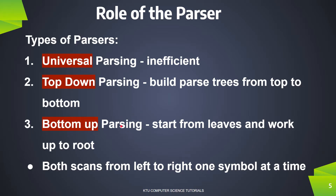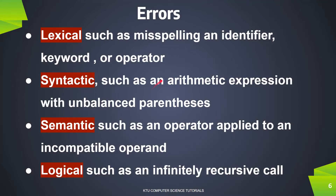The difference between top-down and bottom-up parsing is that we scan the input left to right and scan each symbol. The parse tree construction differs: top-down starts from root to leaves, while bottom-up goes from leaves to root. There are also different types of errors.